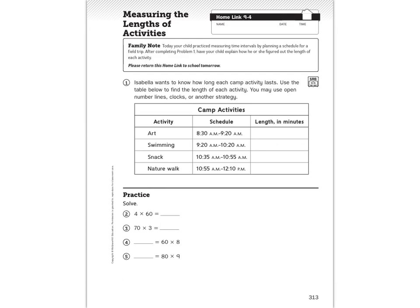Isabella wants to know, not our Isabella, but a different Isabella, wants to know how long each camp activity lasts. Use the table below to find the length of each activity. You may use an open number line, clocks, or a different strategy. So you see the schedule here in this camp activities. And what you need to do is you need to use these time lengths to help you figure out the length in minutes to fill in over here for each of those different activities. Down below, you are going to be doing some extended basic facts that are in there. Use the basic facts that you can find inside to help you figure out the extended facts. That's it for today. It's a short lesson. So hopefully this goes pretty quickly for you. You guys, you're doing great. You have one more new lesson left tomorrow. Bye.